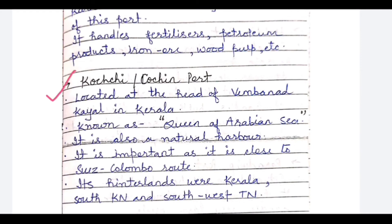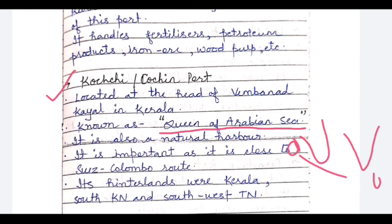The sixth and last port on the West Coast is Kochi port in Kerala, located on the Vembanad Kayal. It is also known as the 'Queen of the Arabian Sea.' It is a natural harbour and important because it is close to the Suez–Colombo route. The hinterlands of Kochi port are Kerala, south Karnataka, and southwest Tamil Nadu.